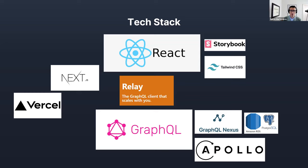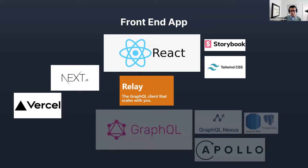The data proxy sits in a critical path of the application and will be used for more advanced features in the future. It sits squarely in mode two — teams deploying production and scalable applications. Now I'll talk about the tech stack.